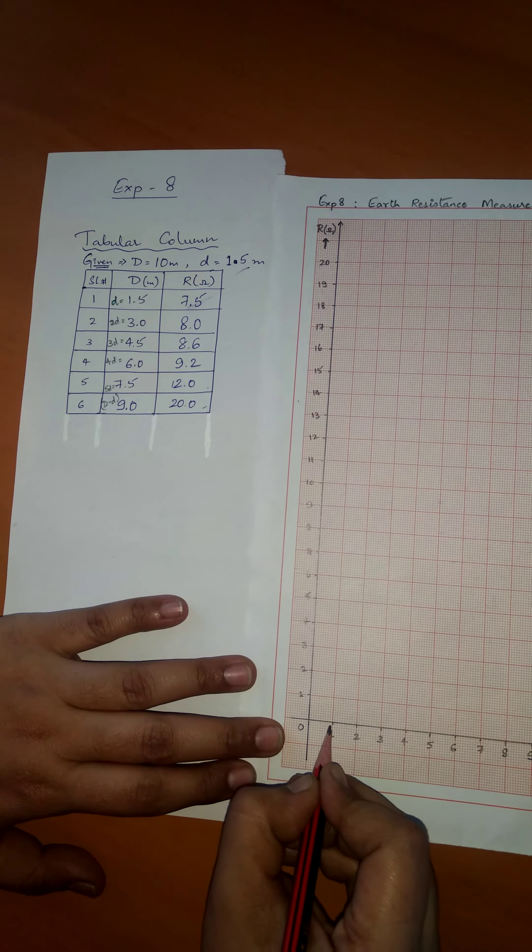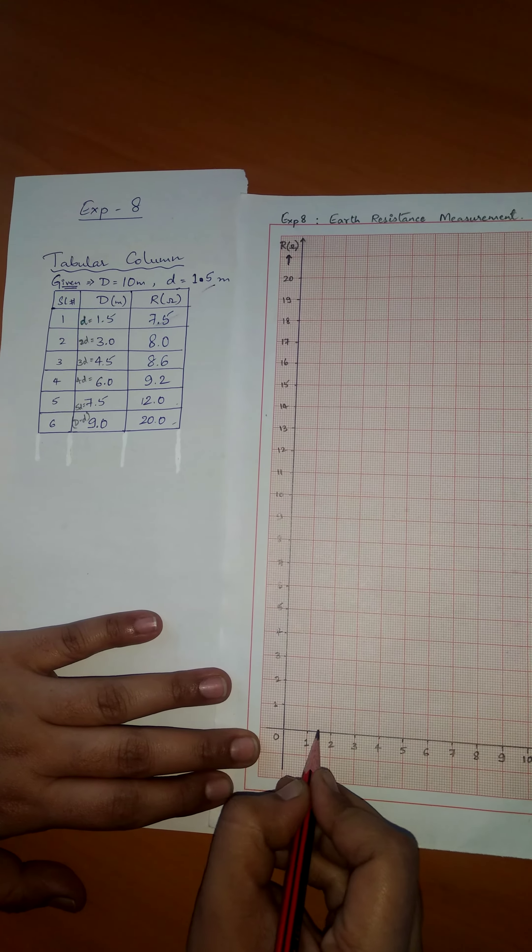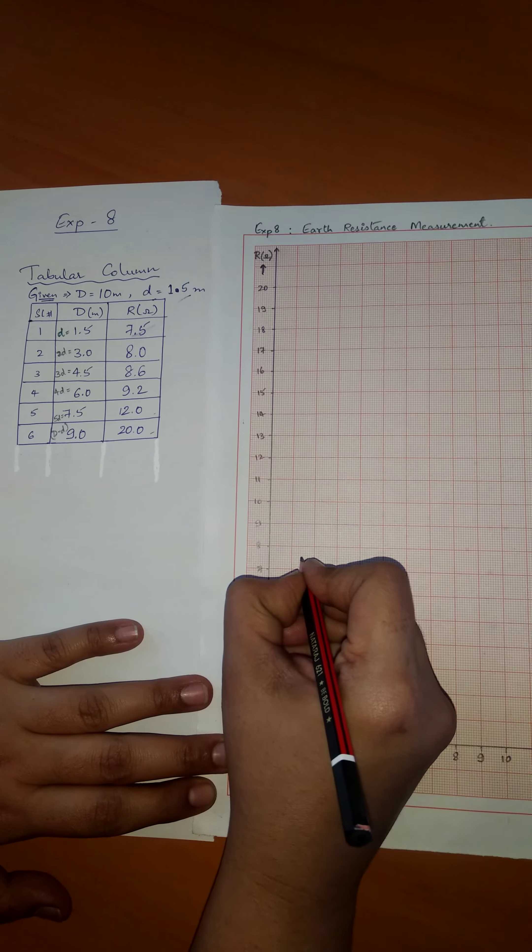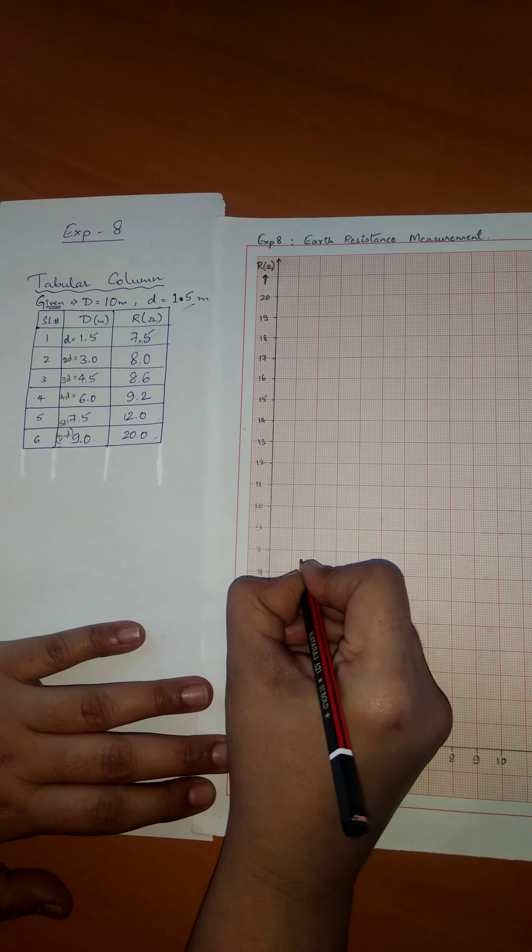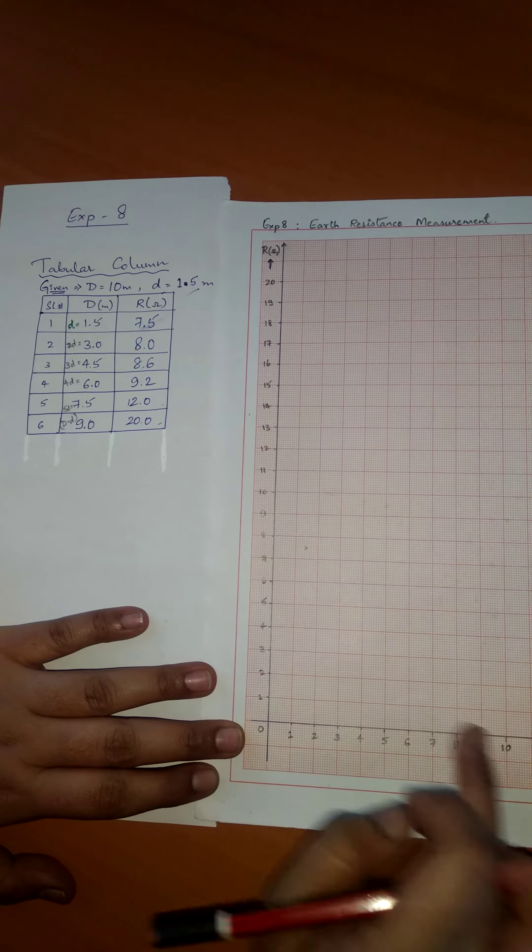Let us mark the points. At 1.5 meter, we had 7.5. This will be the point at 1.5. Similarly, mark the rest of the points.